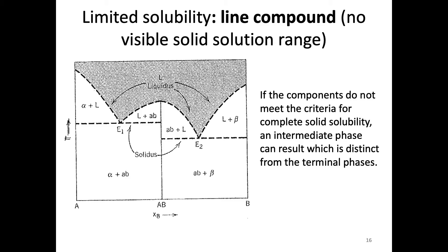In this example, AB doesn't form a solid solution — it has no solubility range. If you have exactly a one-to-one mix of A and B you form AB, but any deviation — adding slightly more B or slightly more A — moves you into a new phase: alpha on one side or beta on the other. There is no visible solid solution range; AB appears as just a line on the phase diagram, so we call it a line compound.